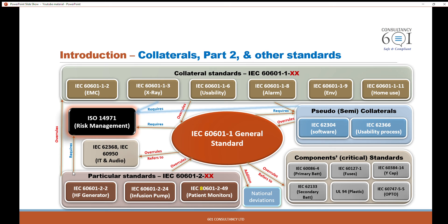If you have the same requirement in the particular standard and the general standard, you will need to satisfy the particular standard when there is a conflict with the general standard. So the particular standard takes priority over collateral and also over the general standard. The pseudo-collaterals also take priority over the general standard.